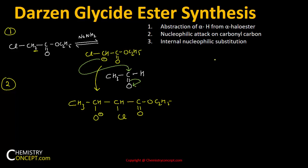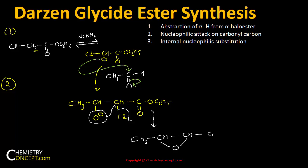The third step is internal nucleophilic substitution. The negatively charged oxygen replaces the chlorine atom, resulting in the formation of an epoxide: CH3-CH-CH with an epoxide ring and C(=O)-O-C2H5. I hope the mechanism was clear to you.